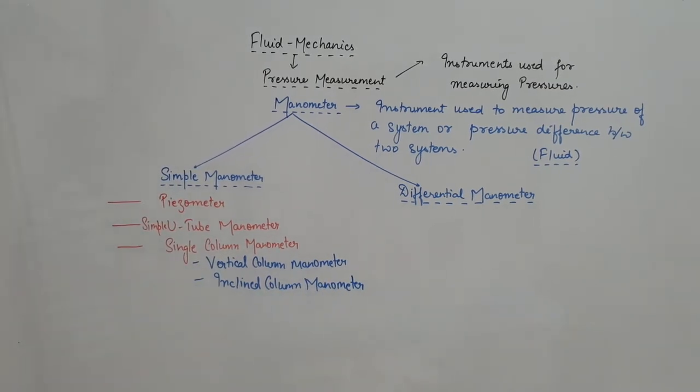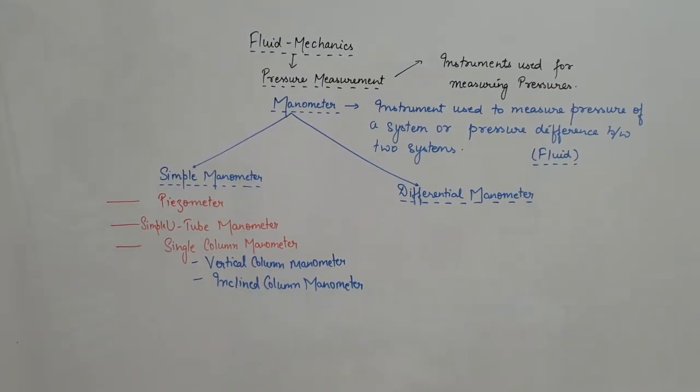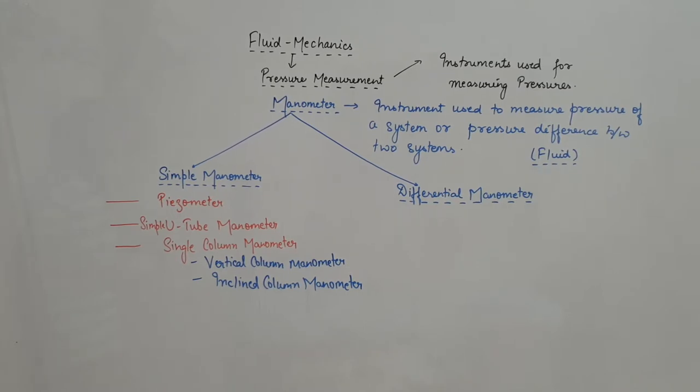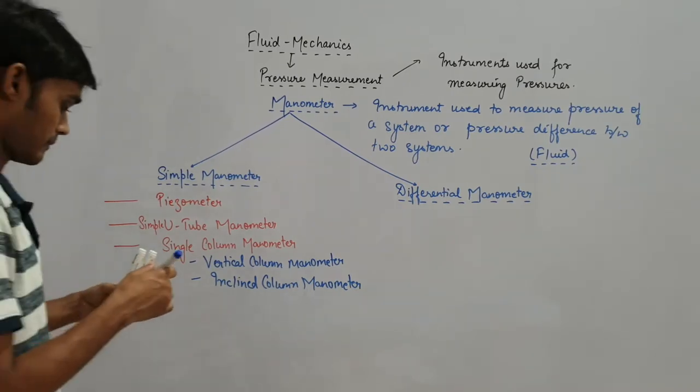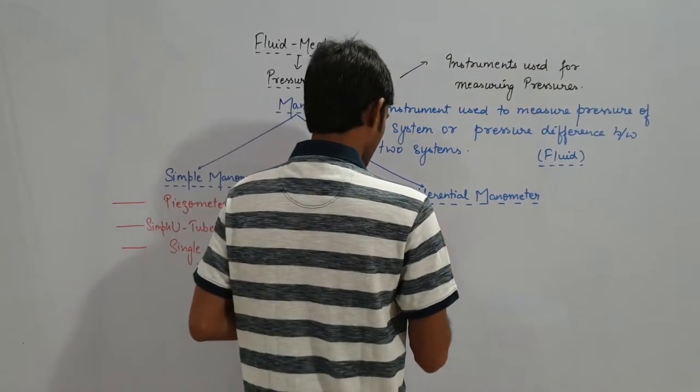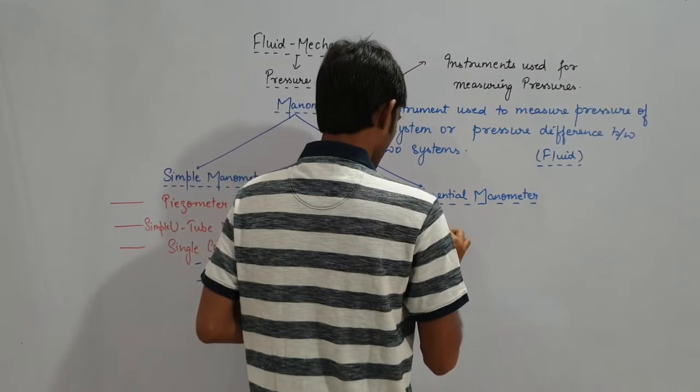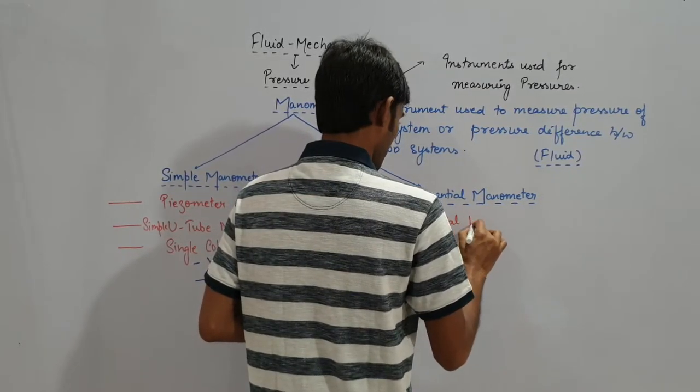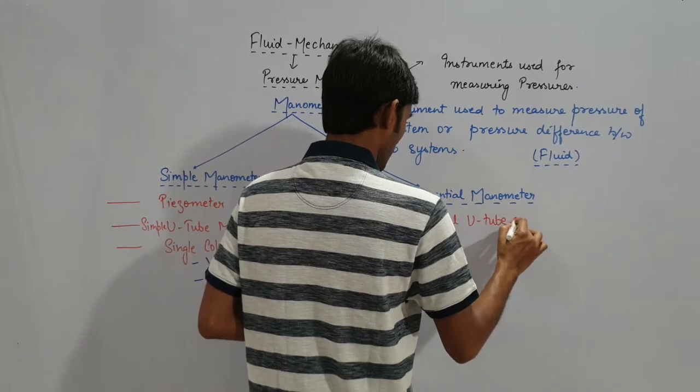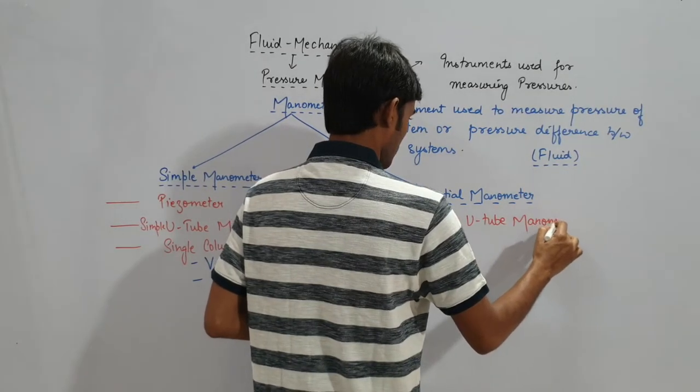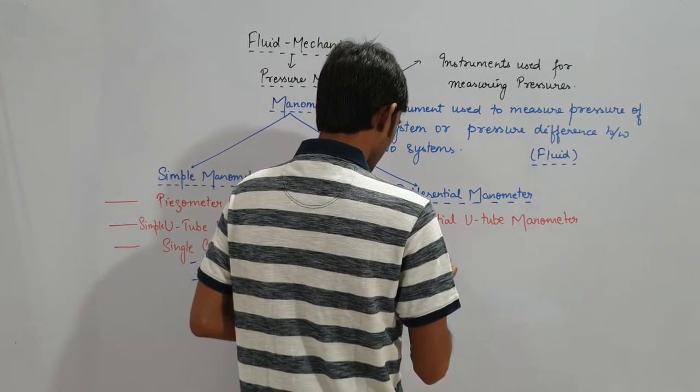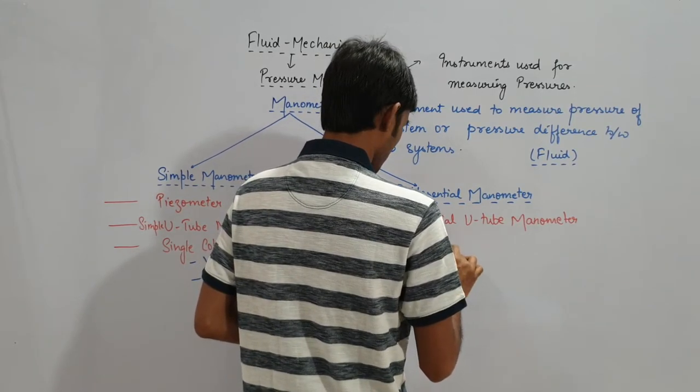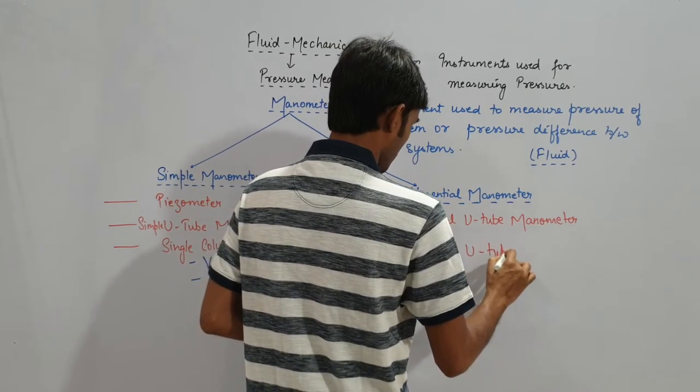These are the classification of simple manometer. And for differential manometer, we will see differential U-tube manometer and the other one, inverted U-tube manometer.